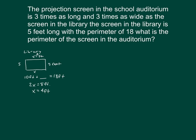So it's three times as wide and three times as long. We know that the library width is four feet. If it's three times as wide, we're talking about three fours. We multiply three times four, which gives us twelve feet. So twelve feet is the width of our projection screen.